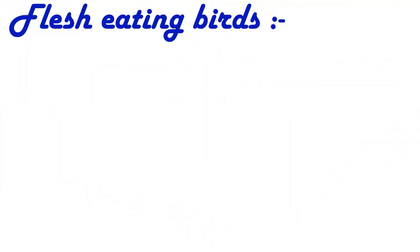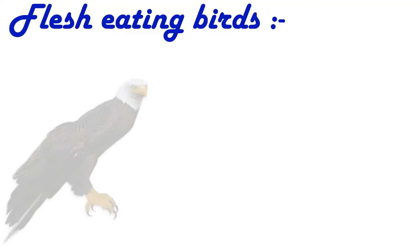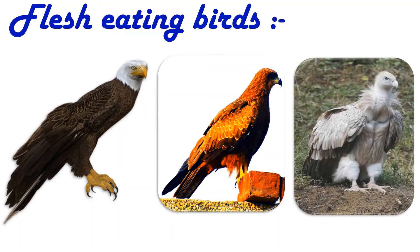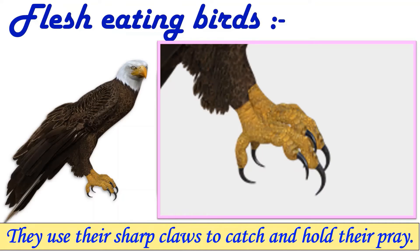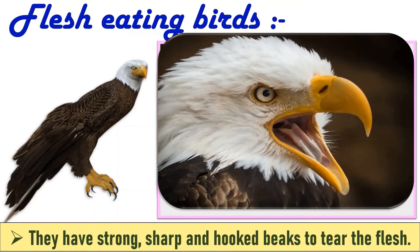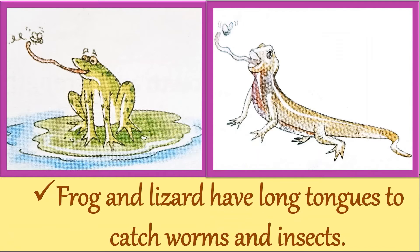Birds such as eagles, kites and vultures also eat flesh. They use their sharp claws to catch and hold their prey. They have strong, sharp and hooked beaks to tear the flesh. Frogs and lizards have long tongues to catch worms and insects.